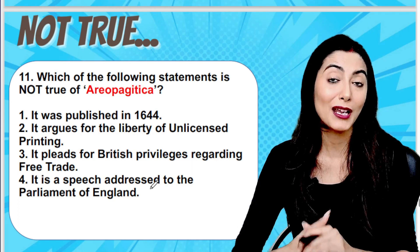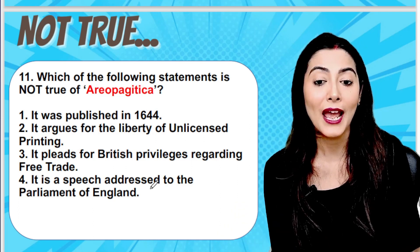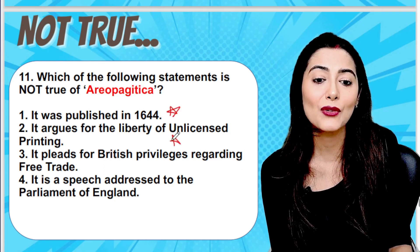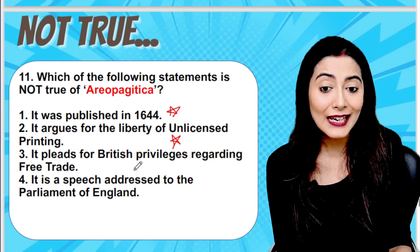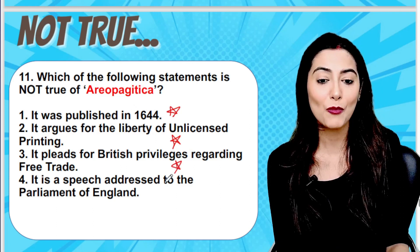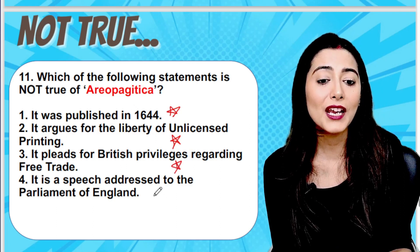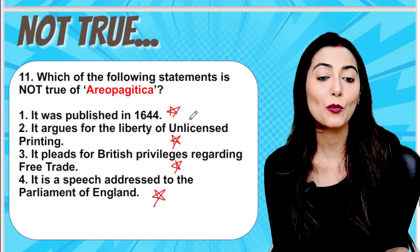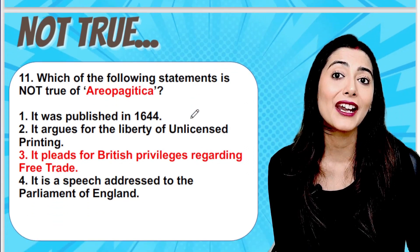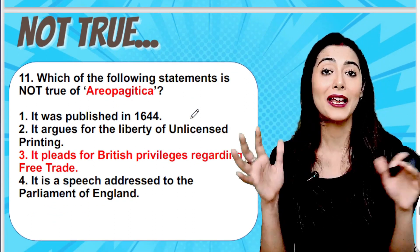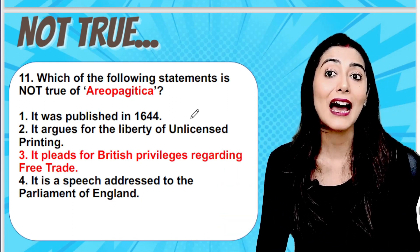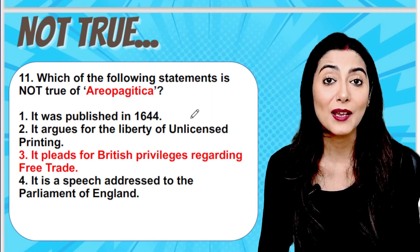For the next question — likely Milton's Areopagitica — we read four statements: point one, it was published in 1644; point two, it argues for the liberty of unlicensed printing; point three, it pleads for British privileges regarding free trade; point four, it is a speech addressed to the Parliament of England. Point three is NOT TRUE — Areopagitica does not talk about free trade; it talks about freedom of speech and unlicensed printing.